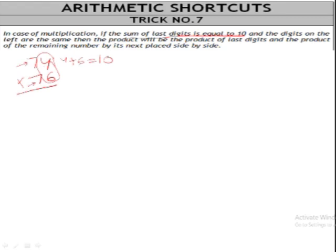So the product is simply multiply these two: 4 times 6 is 24. And then multiply 7 by the next number. What's the next? Next is 8. So 7 times 8 is 56, so it becomes 5624.